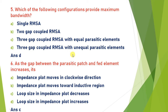As the gap between the parasitic patch and feed element increases, the loop size depends on this gap. If the gap between the feed element increases, the loop size also decreases — it is inversely proportional to the loop size. So the answer is C.